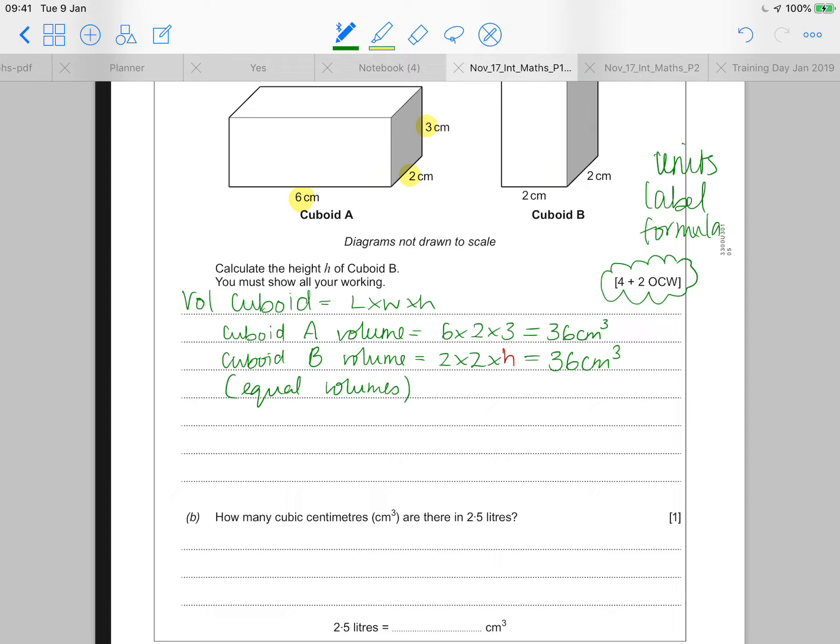So I'm going to write by here equal volumes. If you look at that second calculation, I know that this part of the calculation, 2 by 2, is going to be 4. So I'm going to write underneath here now, 4 times H equals 36 centimetres cubed. H equals 36 divided by 4 equals 9 centimetres.